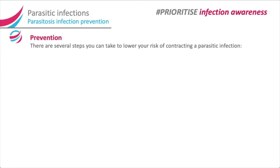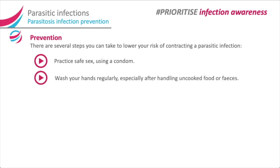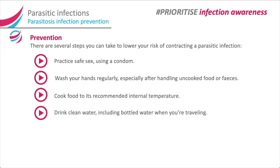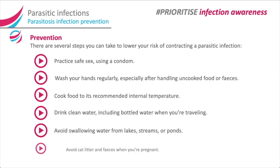There are several steps you can take to lower your risk of contracting a parasitic infection: practice safe sex using a condom; wash your hands regularly, especially after handling uncooked food or feces; cook food to its recommended internal temperature; drink clean water, including bottled water, when you are travelling; avoid swallowing water from lakes, streams or ponds; and avoid cat litter and feces when you are pregnant.